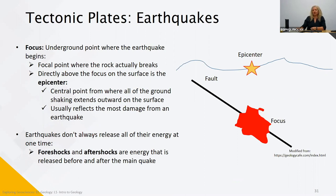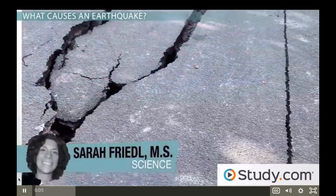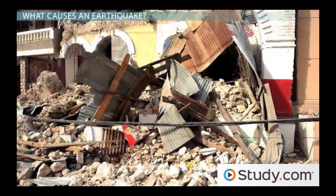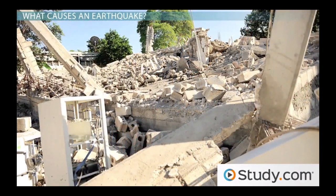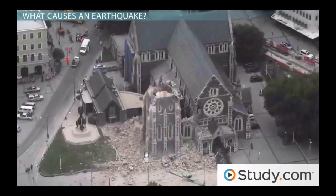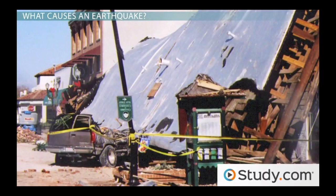Most earthquakes don't only have one shock — they have foreshocks and aftershocks, so they can have several episodes. Earthquakes are one of the most dangerous natural disasters on earth because they strike with little or no warning and can cause catastrophic damage. All that shaking comes from deep underground, but the surface shakes too — buildings fall down, roads and bridges collapse, and land and mud come sliding down from hillsides.